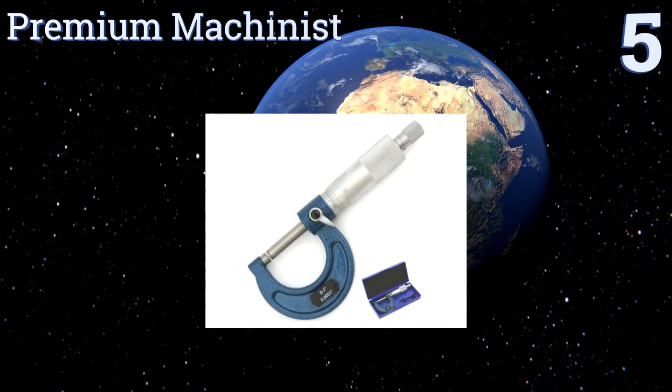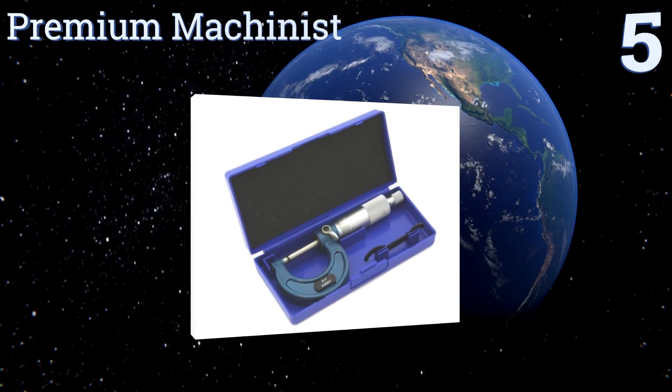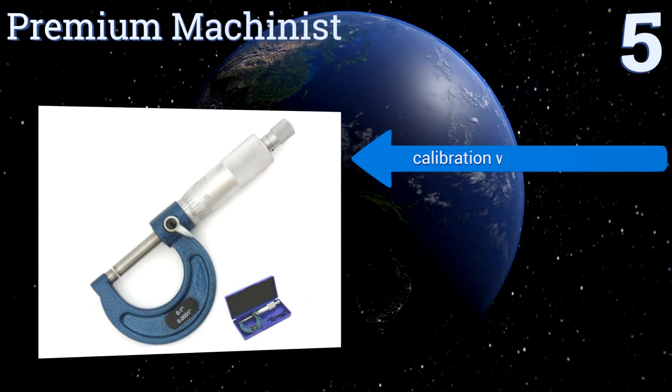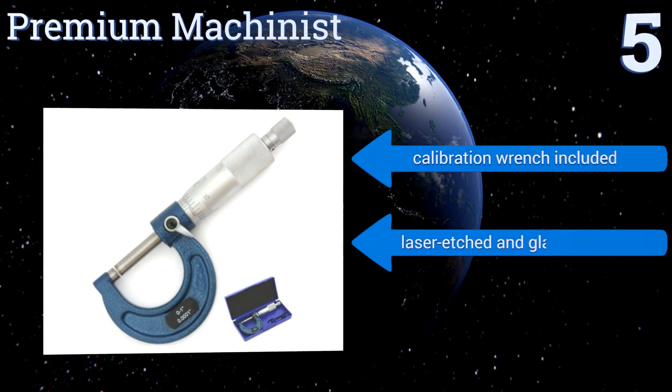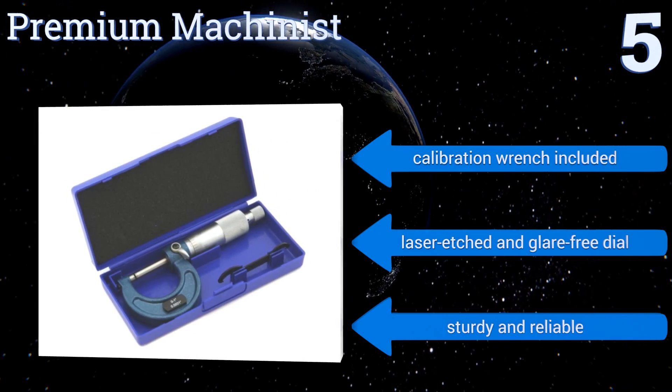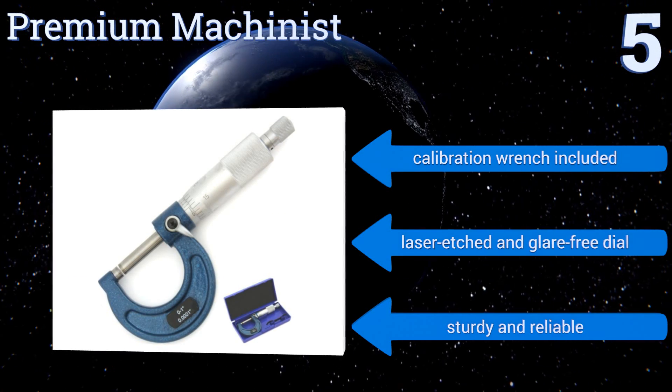Halfway up our list at number five, accurate to one ten thousandth of an inch, Anytime's Premium Machinist lets you take precise measurements using its classic ratchet and fixed thimble design. This straightforward solution to your medium duty precision gauging needs is sure to fit any budget. It includes a calibration wrench and a laser etched and glare free dial. It's sturdy and reliable.